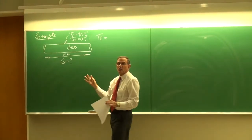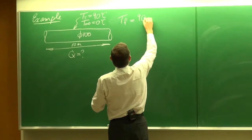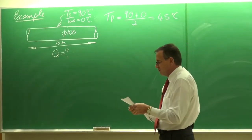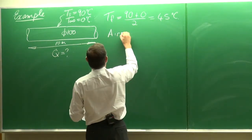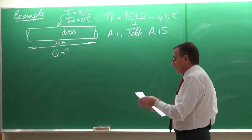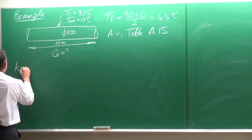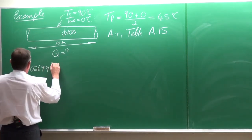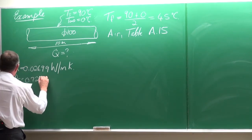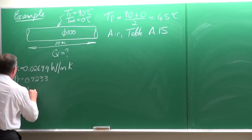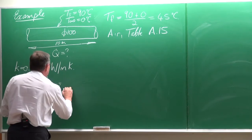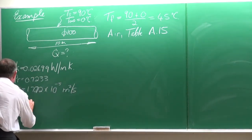Firstly, we need to get the properties of the air on the outside at the film temperature, which is equal to (90 + 0) / 2 = 45 degrees Celsius. For air, you can get these in your textbook, Cengel and Kajar, Table A15. The values are: thermal conductivity k = 0.02699 W/m·K, Prandtl number = 0.7233, and kinematic viscosity ν = 1.772 × 10⁻⁵ m²/s. The last property we need is beta.